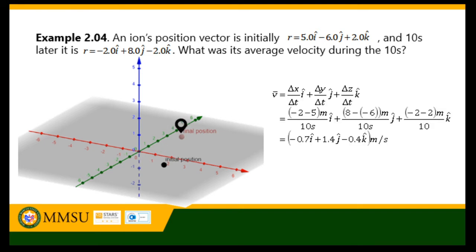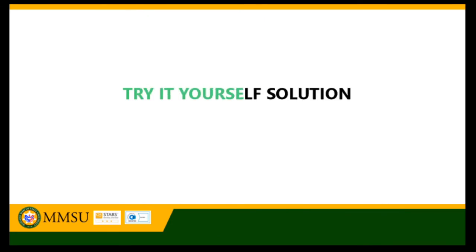The average velocity of the ion can be computed in unit vector notation by taking the velocity in each component: delta-x over time i-hat for the x-component, delta-y over time j-hat for the y-component, and delta-z over time k-hat for the z-component. So the average velocity of the ion is negative 0.7 m/s i-hat plus 1.4 m/s j-hat minus 0.4 m/s k-hat.